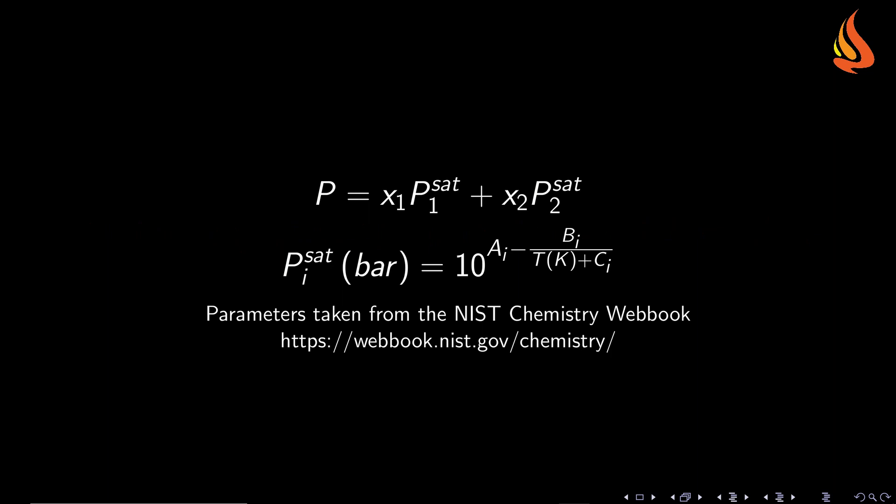According to Raoult's law, we can calculate the pressure in a system multiplying the mole fraction of a component in the liquid phase by its vapor pressure, and then add the contribution of all components, as shown in the first equation of this slide. The vapor pressure depends on the temperature, and the next equation in this slide is Antoine's equation.